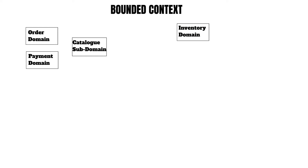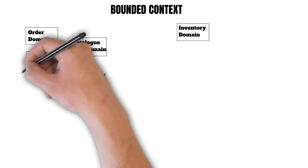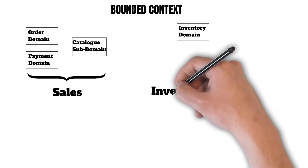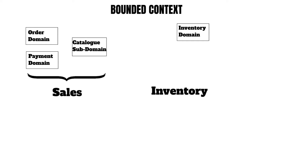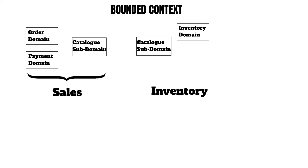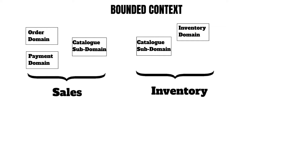When we go to define a bonded context called sales, we find that it is using the order domain, the payment domain, and the catalog subdomain as well. When we go ahead to define the next bonded context, inventory, we realize that it also uses the catalog subdomain along with the inventory domain. So the catalog subdomain is present in both the sales and inventory bonded contexts, but it will have a different relevance in both.